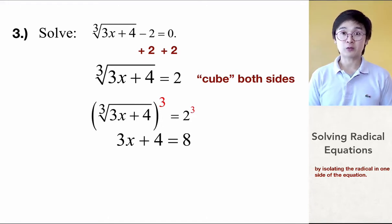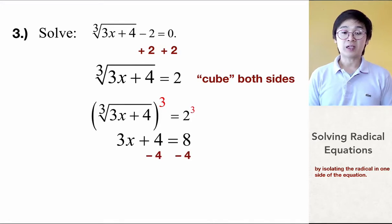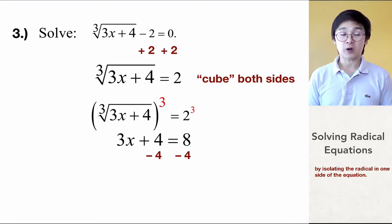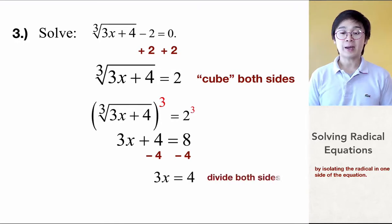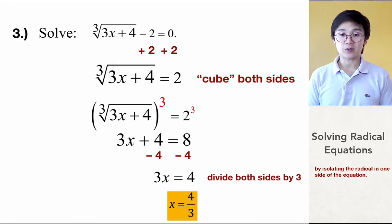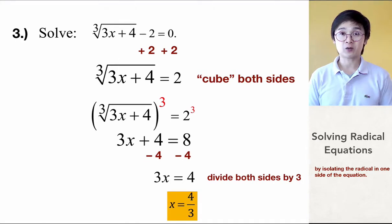And we know that 2 raised to the third power is equal to 8. Since we are going to solve for the value of x, we only need 2 more steps. By subtracting 4 on both sides, we are left with 3x equal to 4. And by dividing both sides by 3, x is equal to 4 over 3. So this is our solution for cube root of 3x plus 4 minus 2 is equal to 0.